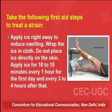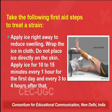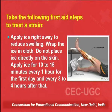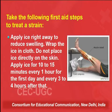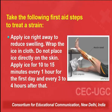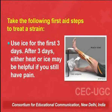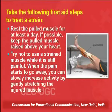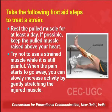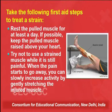Take the following first aid steps to treat the strain. First of all, apply ice right away to reduce the swelling. Wrap the ice in cloth — do not place ice directly on the skin. Apply ice for 10 to 15 minutes every 1 hour for the first day, and every 3 to 4 hours after that. Use ice for the first 3 days. Then rest the pulled muscle for at least a day. If possible, keep the pulled muscle raised above your heart.